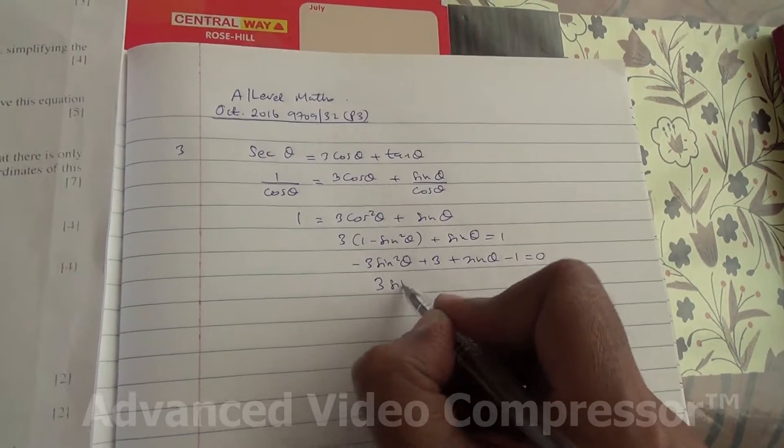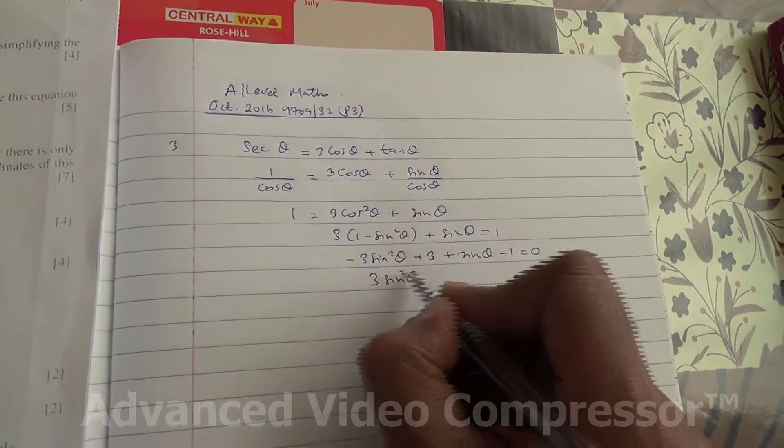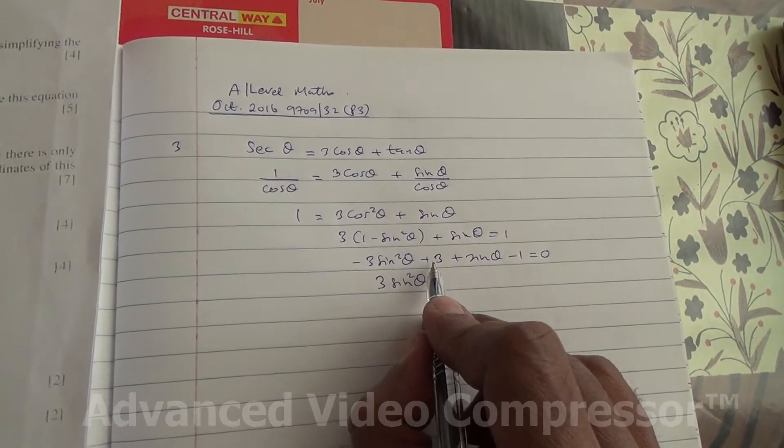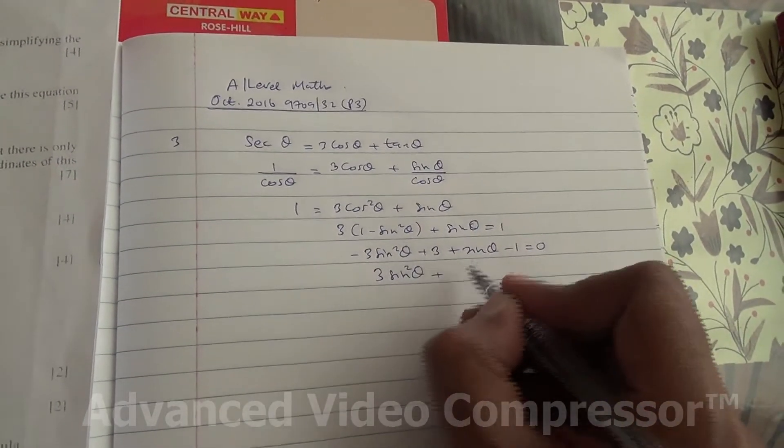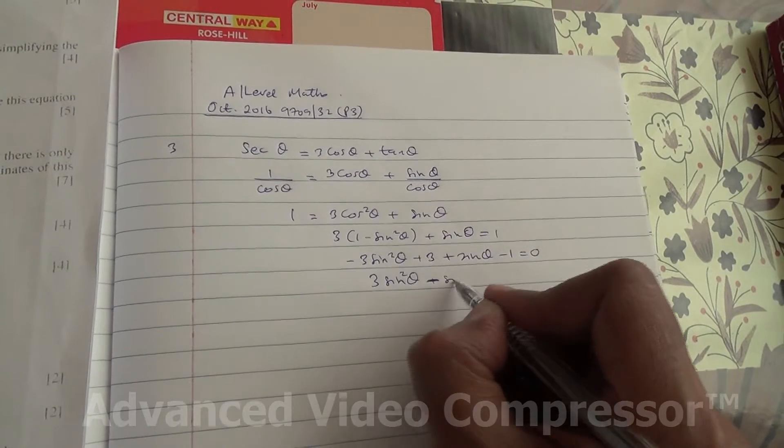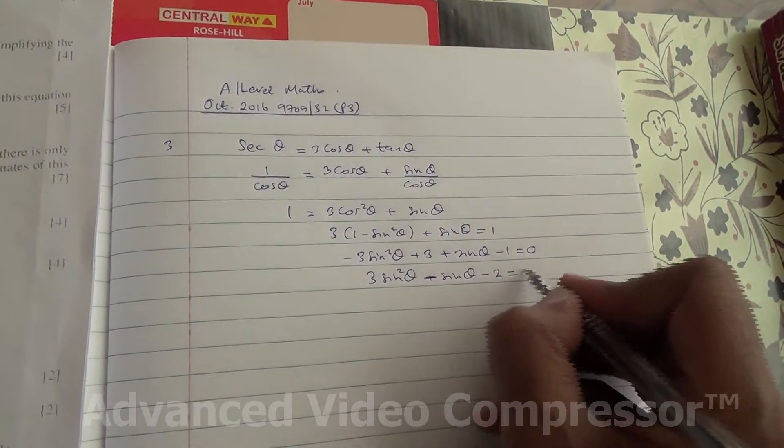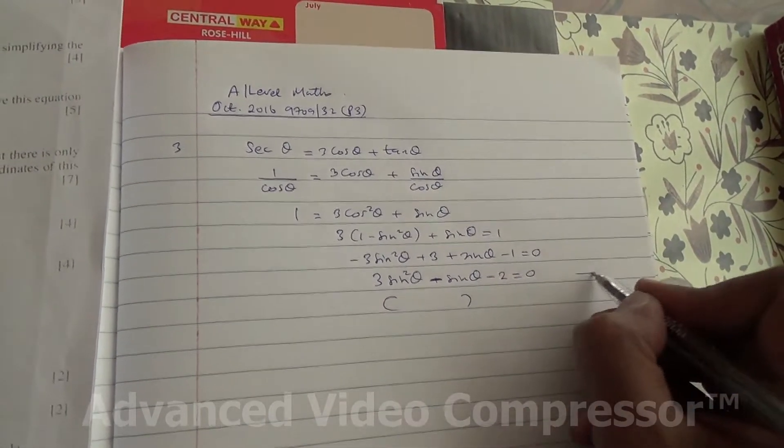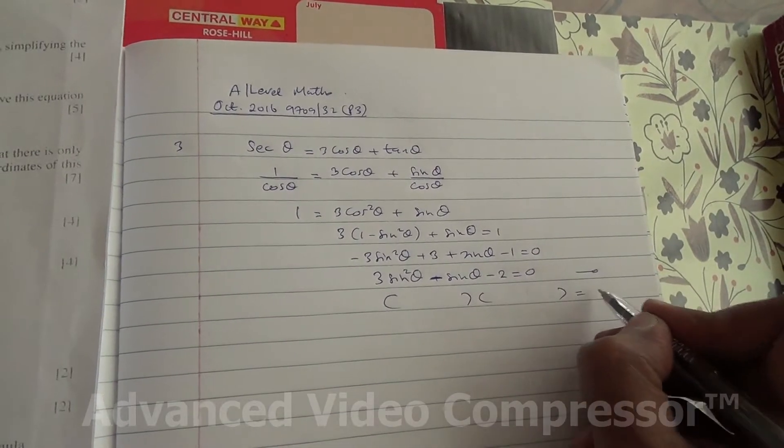3 sin squared theta, plus becomes minus, so minus 3 plus 1 is minus 2, so minus sin theta minus 2 is equal to 0. So this has been expressed as a quadratic equation.